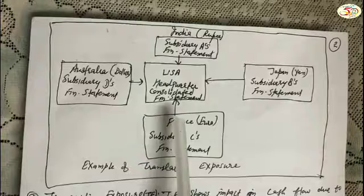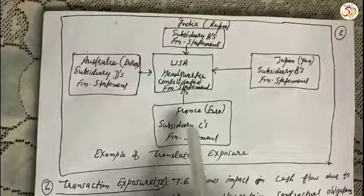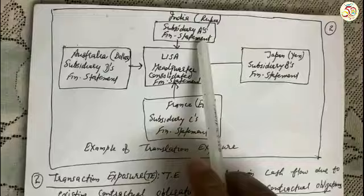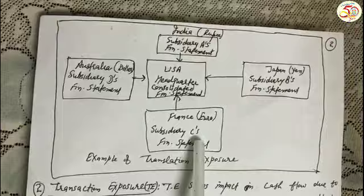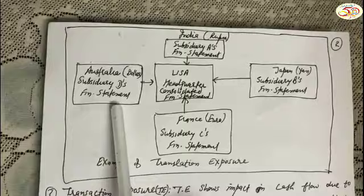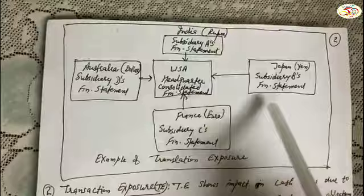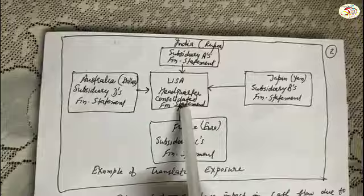We can explain translation exposure with the help of a diagram. Suppose there is one parent company operating from the USA — its head office is in the USA, but subsidiaries are operating in India, Japan, France, and Australia. The subsidiary in India will prepare its financial statement in rupees, the one in Japan in yen, the one in France in euro, and the one in Australia in Australian dollars. All four subsidiaries' consolidated financial statements will be prepared at the parent firm in the USA. During this consolidation process, there can be translation loss or risk, called translation exposure.